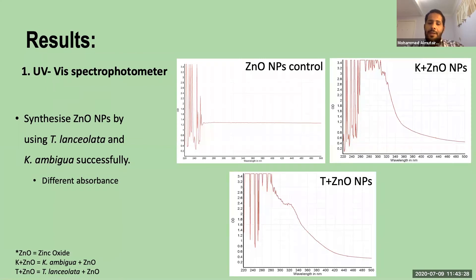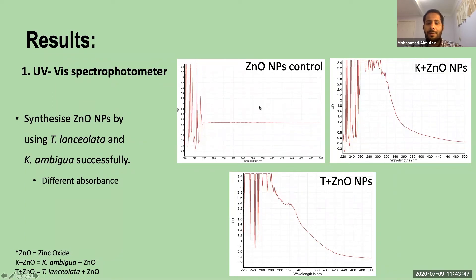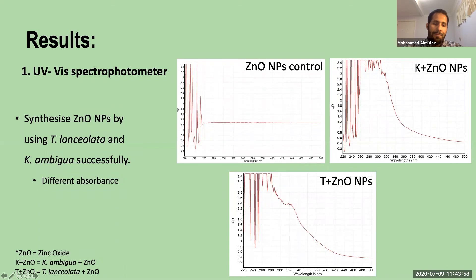The results show that UV-visible spectrophotometry confirmed that the zinc oxide nanoparticles were successfully synthesized using Tasmannia lanceolata and Kunzea ambigua leaf extract. You can see the different observations between the control zinc oxide nanoparticles and the green synthesized nanoparticles — Kunzea ambigua here, and Tasmannia lanceolata at the bottom. It is a clear observation.